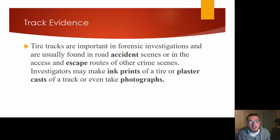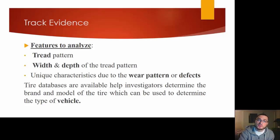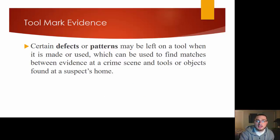Tire tracks are important in forensic investigations and are usually found in road accident scenes or in the access and escape routes of other crime scenes. Investigators may make ink prints of a tire or plaster casts — very important because you can go back and examine the evidence without worrying about rain ruining the print. Some features to analyze are tread patterns, width and depth of the tread pattern, unique characteristics, the way they were worn, and any defects or patterns.